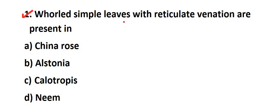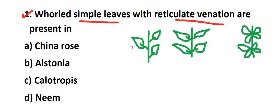The first question: simple leaves with reticulate venation are present in which plant? The simple leaves are like these. We will first describe the types. Leaves are of three types based on phyllotaxy.